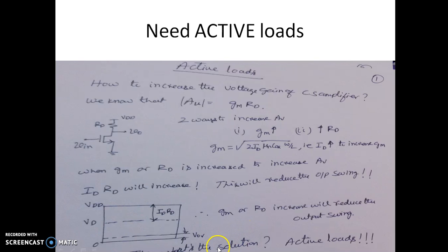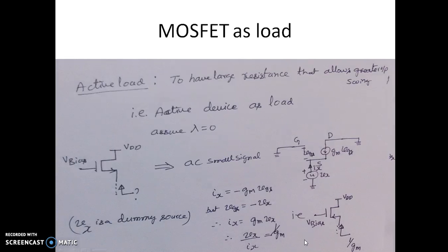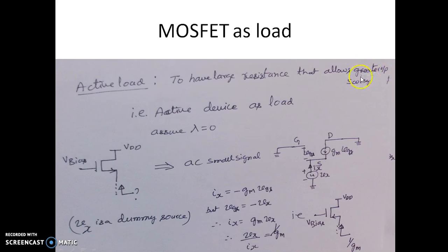Then what is the solution? The solution is we have to go for active loads. An active load should give a high resistance value but also allow a greater swing. We need to get larger resistance but it should not consume too much voltage drop. Active devices like MOSFETs will be used as load.